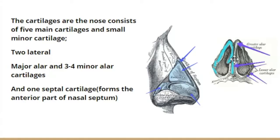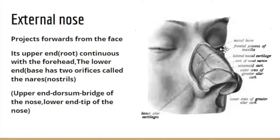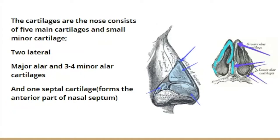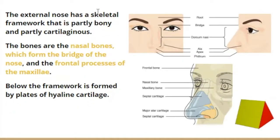So far we have seen that the external nose projects forward from the face with an upper and lower end; the lower end has two nostrils. Its framework is partly bone — the nasal bones, the frontal process of the maxilla, and parts of the frontal bone — and partly cartilage, as listed.